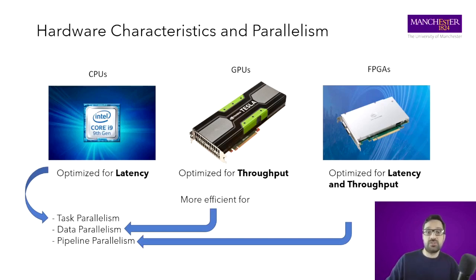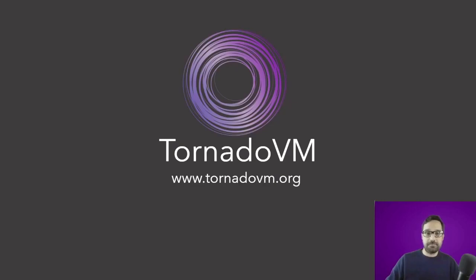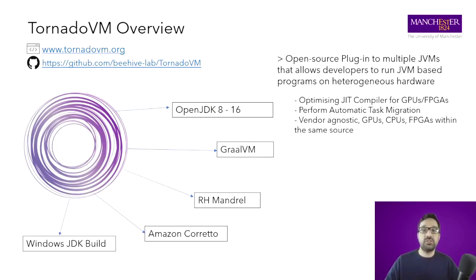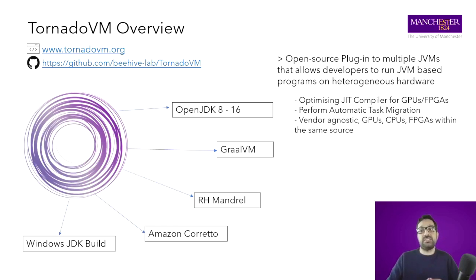And I will show you how TornadoVM does it. TornadoVM is a plugin to JDK that allows Java developers to execute programs on heterogeneous hardware fully automatically. It has an optimized JIT compiler specialized for different types of hardware. The code generated for GPUs is different from the code generated for FPGAs or multi-core. TornadoVM can also run on multi-core systems.